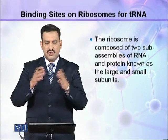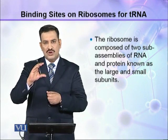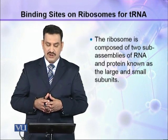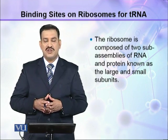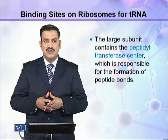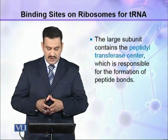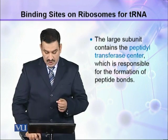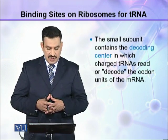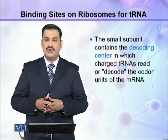As you know, ribosome is an organelle and this ribosome has two sub-assemblies. There are two sub-assemblies of RNA and proteins, and these two sub-assemblies are known as large and small sub-units. The large sub-unit contains the peptidyl transferase center, which is responsible for the formation of peptide bond, while the small sub-unit contains the decoding center, in which charged tRNA reads or decodes the codon units of the mRNA.